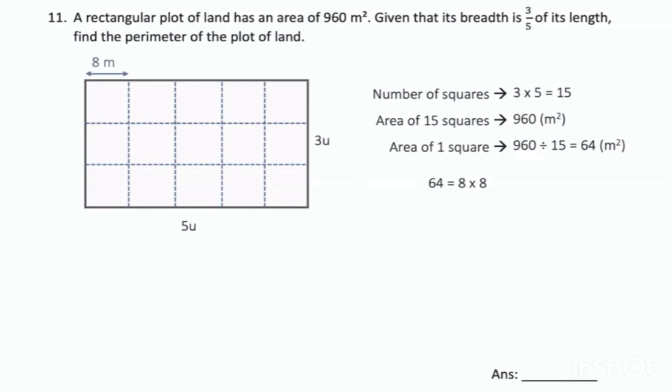So what's the question? Perimeter. Now the perimeter counts the outside. How many sides are there? The length is made out of 1, 2, 3, 4, 5. Right? So 8 times 5. The breadth is 3 times 8. So the perimeter is 2 times the length plus 2 times the breadth.